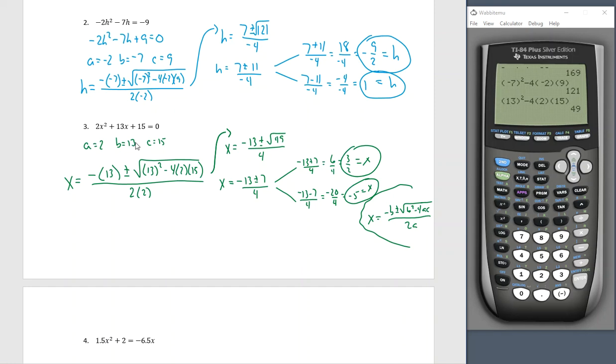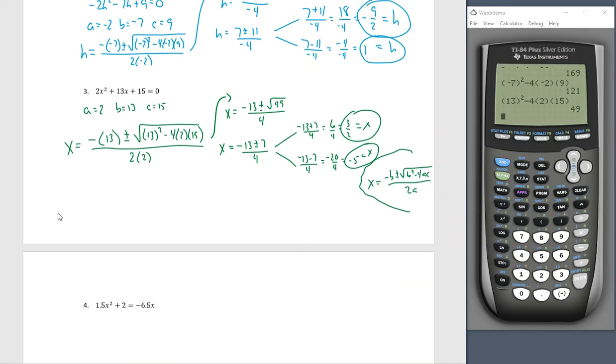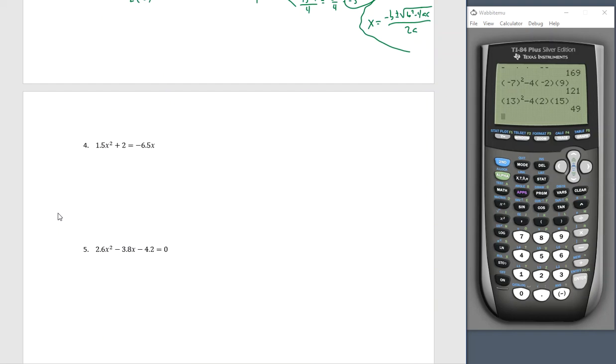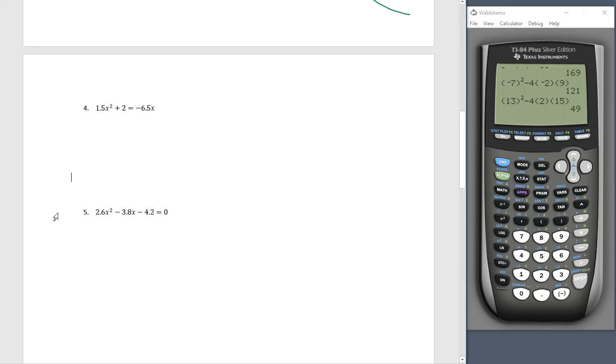Using the quadratic formula, we could factor, but for those of you that are not big fans of factoring, this is a godsend. This is fantastic. And it gets even better. We could use quadratic formula when we have decimals in our problems. Nobody really wants to factor using decimals. If we use quadratic formula, let's add 6.5x to both sides. That way we have decreasing order. A is 1.5, B is 6.5, C is 2.